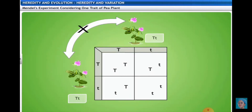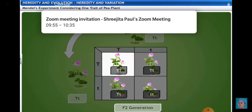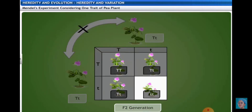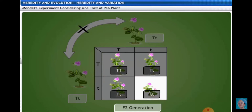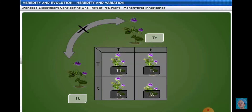In the F1 generation, the dwarf character is suppressed. To observe it, the F2 generation is created by selfing the F1 generation — crossing Tt × Tt. After doing the Punnett square, we find one homozygous tall (TT), two heterozygous hybrids (Tt), and one homozygous dwarf (tt), giving a genotypic ratio of 1:2:1.